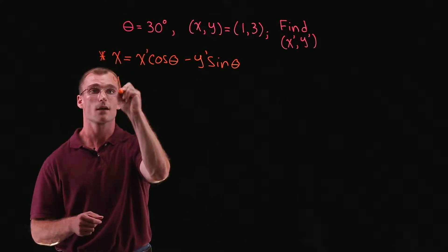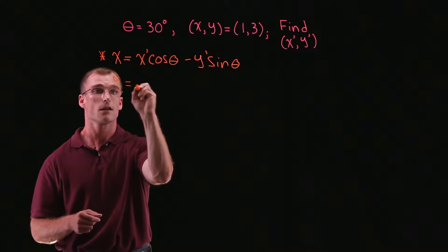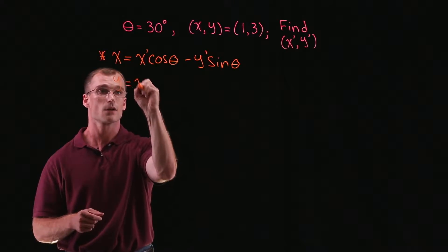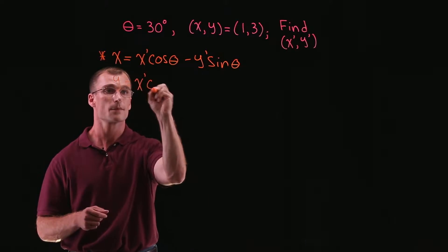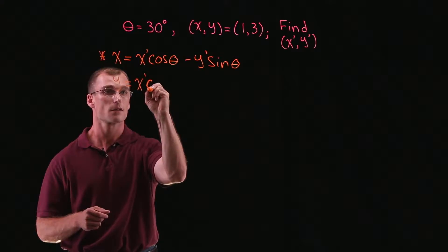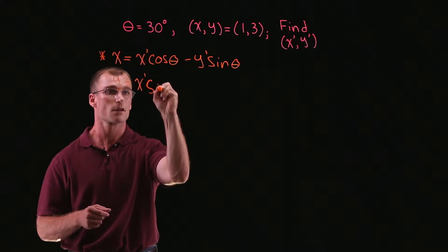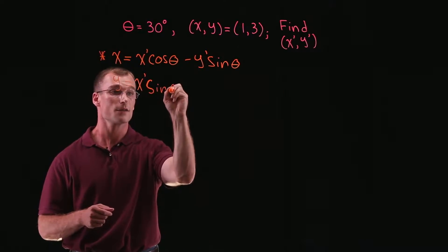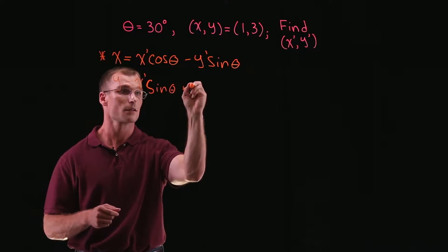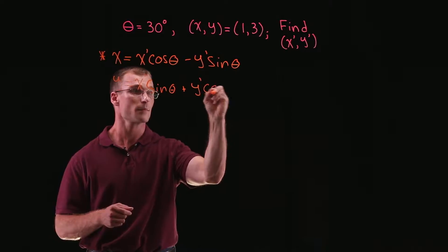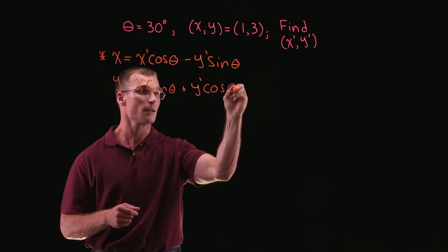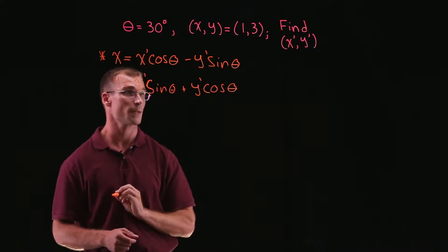And y is equal to x prime times sine of theta plus y prime times cosine of theta.